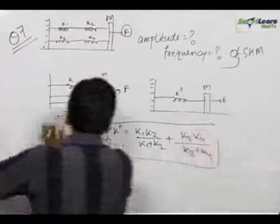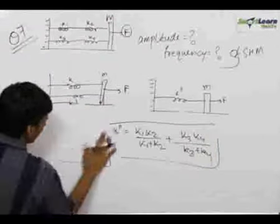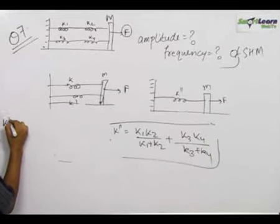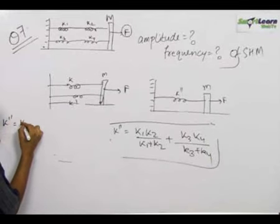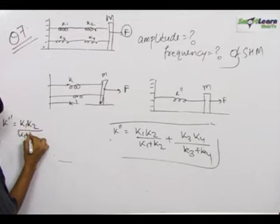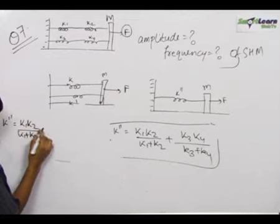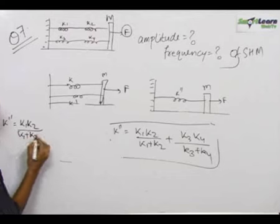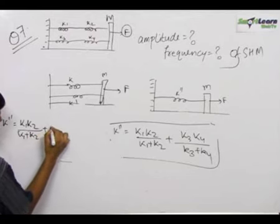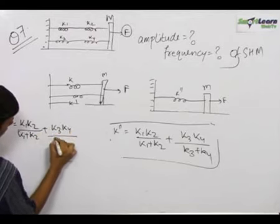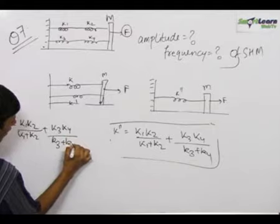So this is the resultant spring constant of a single spring which can replace all this complexity. To write it clearly: k double dash is equal to k1·k2 upon k1 plus k2, plus k3·k4 upon k3 plus k4.